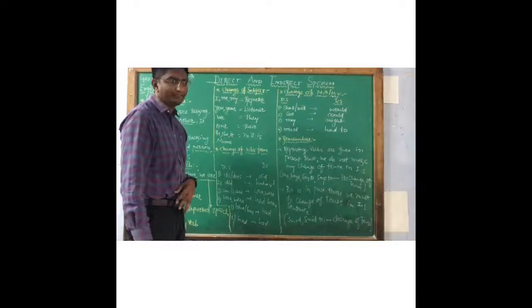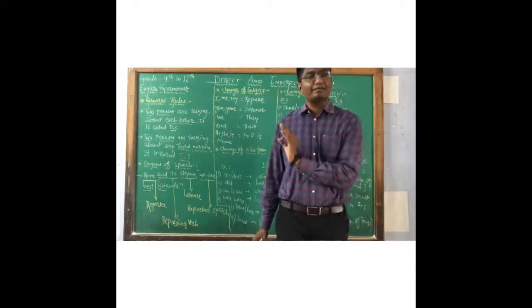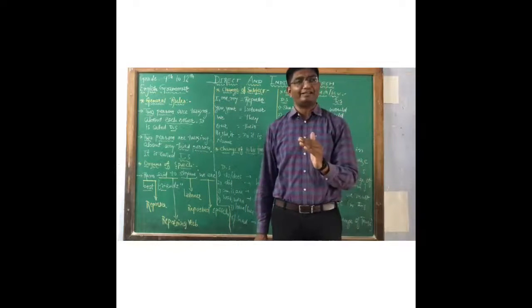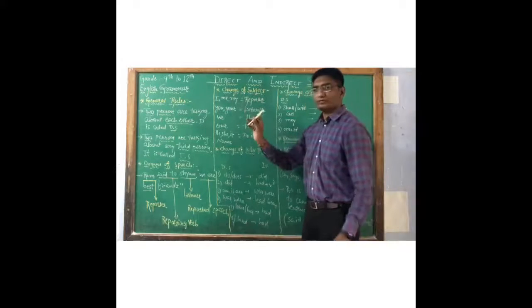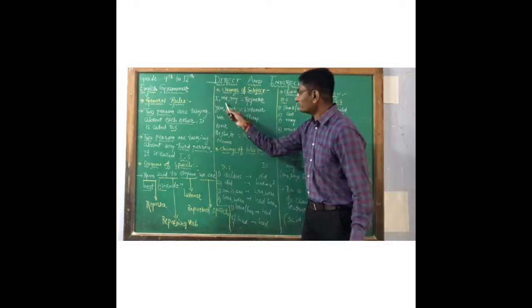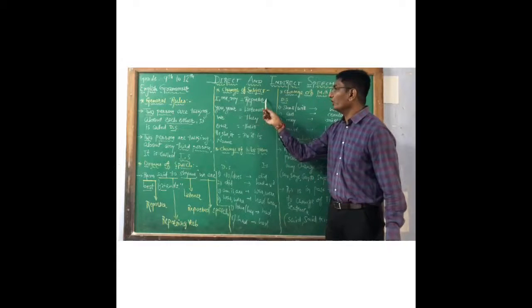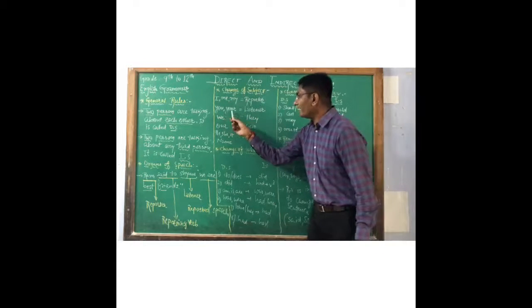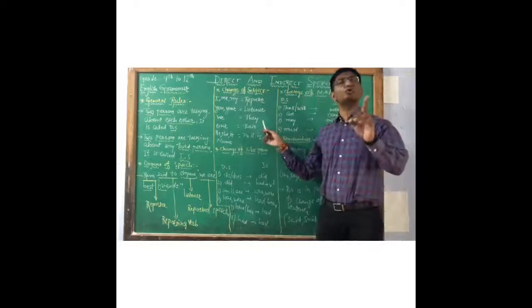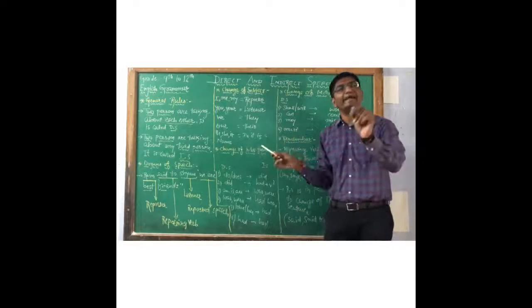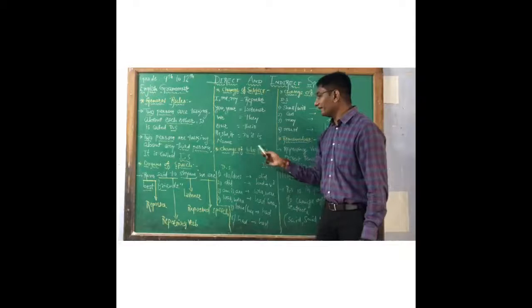Now next segment is the change of subject. Change of subject. Whenever in inverted comma sentence, it is known as reported speech, in reported speech see here all of you. I, me, and my is given in reported speech. So I, me, and my is used for reporter. You and your is used for listener. Then we turns into they. Our turns into their, T-H-E-I-R. Then he, she, it or any name is given, so it remains as it is.